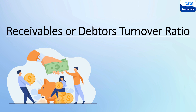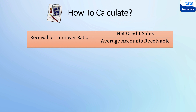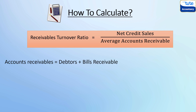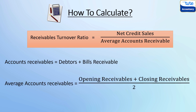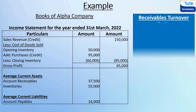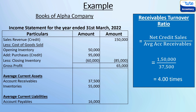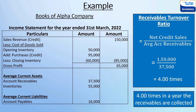Moving on to the receivables or debtors turnover ratio. This ratio measures the efficiency with which the management is managing its account receivables. This ratio can be found out by dividing the credit sales by the average accounts receivable. The term account receivables includes debtors and bills receivable, and the average can be computed by taking an average of account receivables at the beginning and at the end of the year. This ratio tells us the number of times a company can collect its account receivables in a year. In this example, credit sales are 1,50,000 and average account receivable is given as 37,500, giving us an account receivable ratio of 4 times — that is, 4 times in a year the receivables are collected.